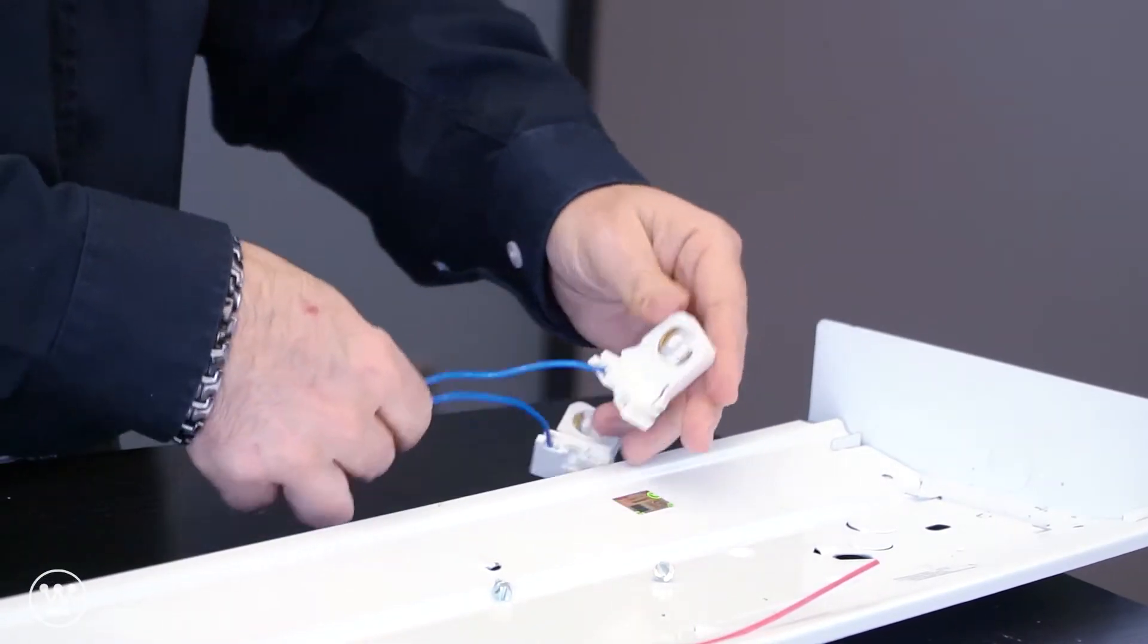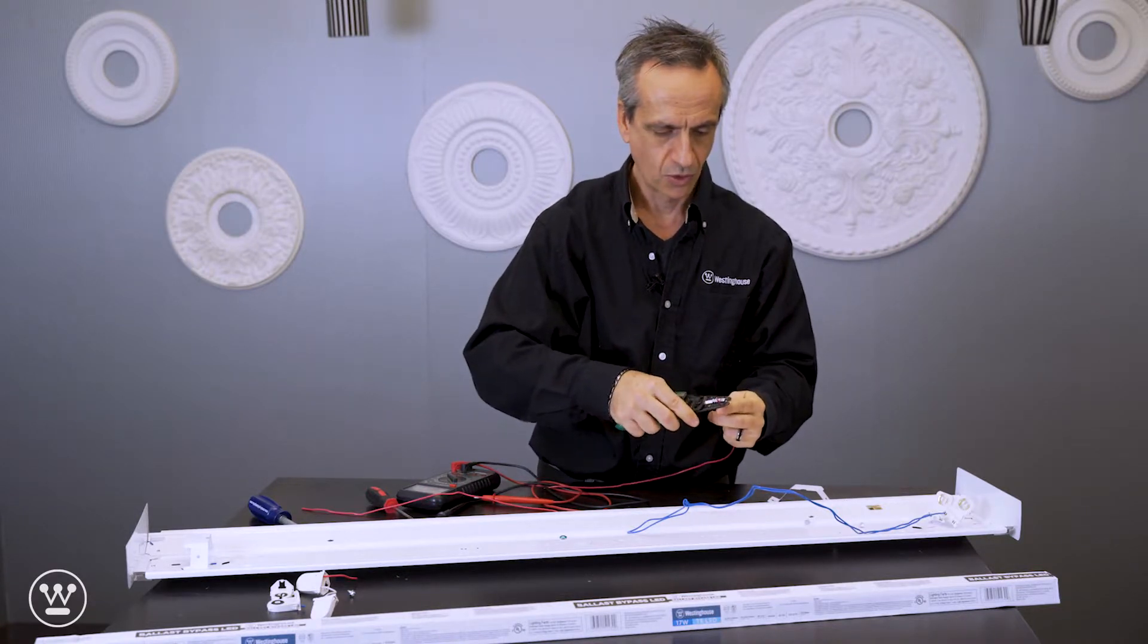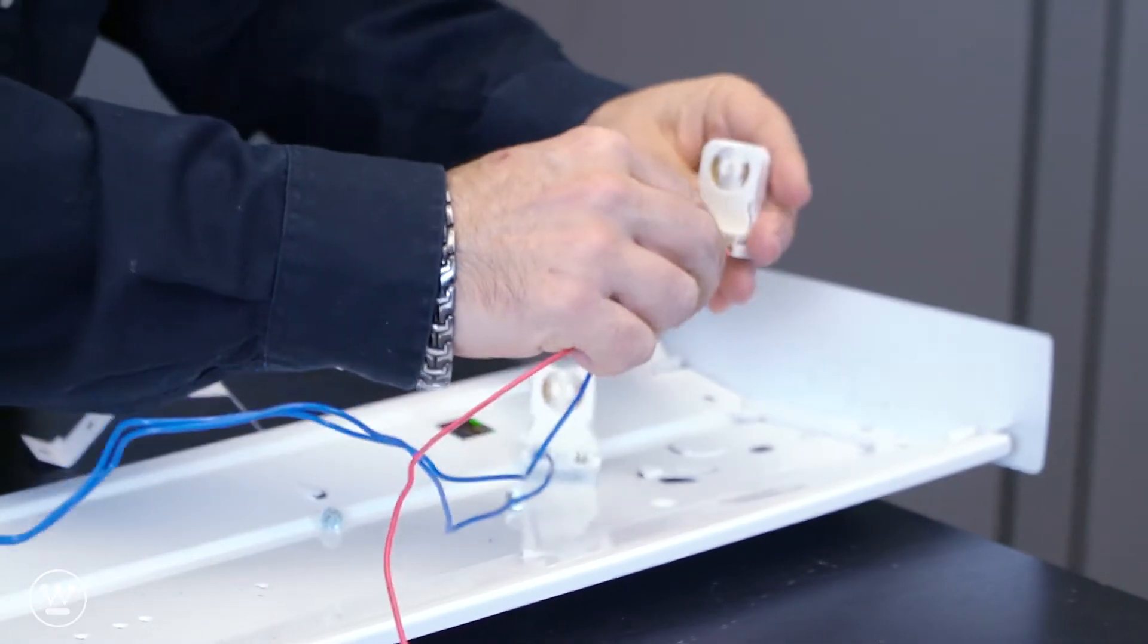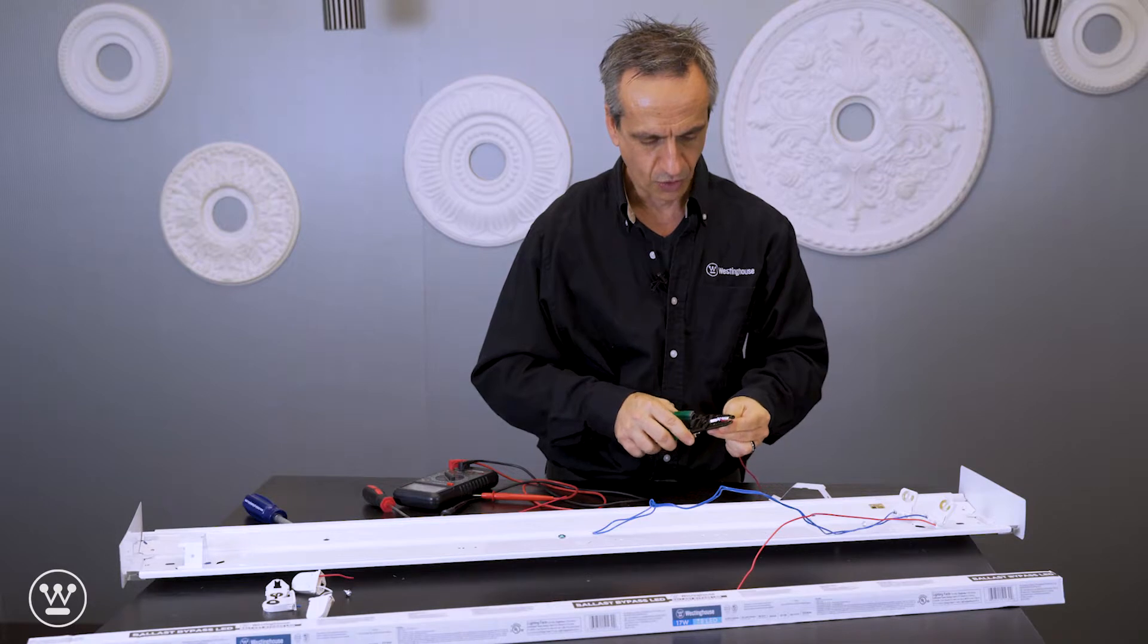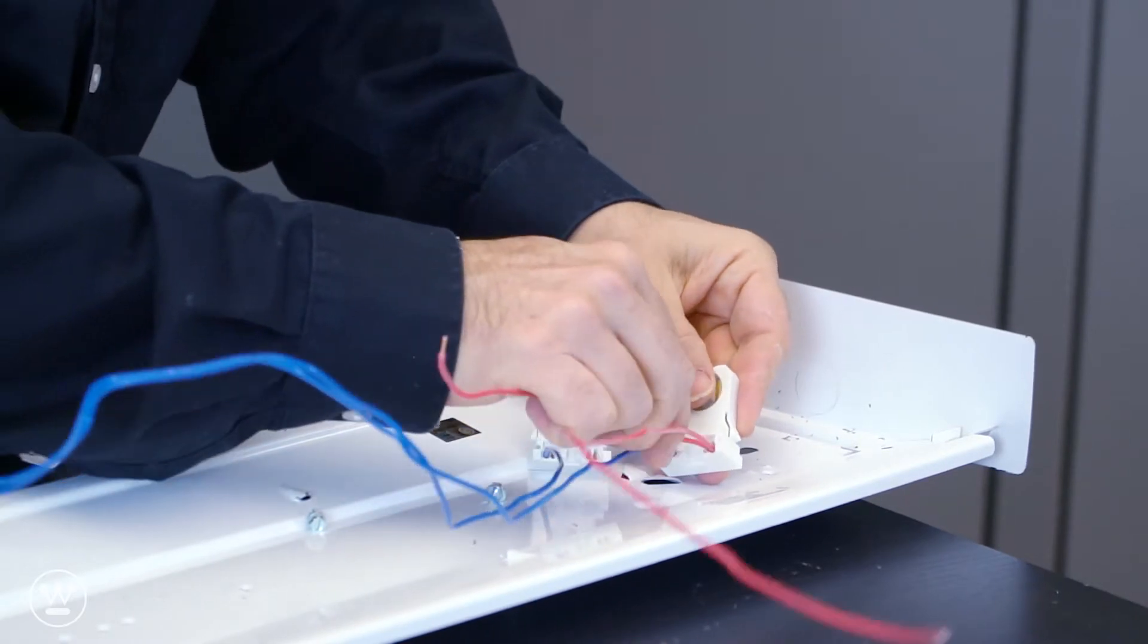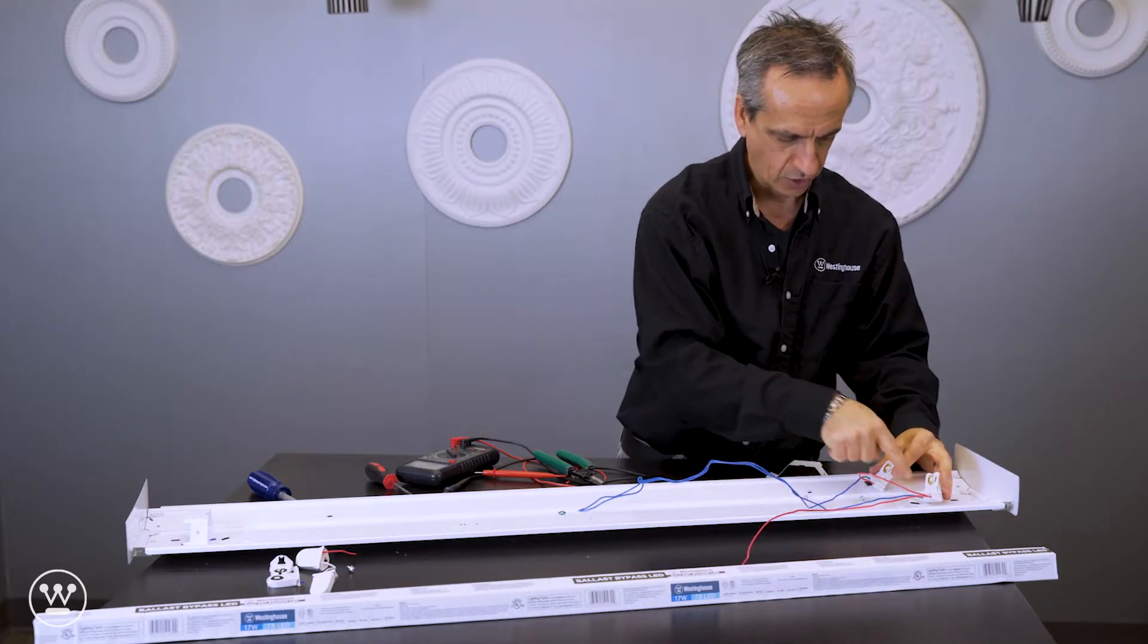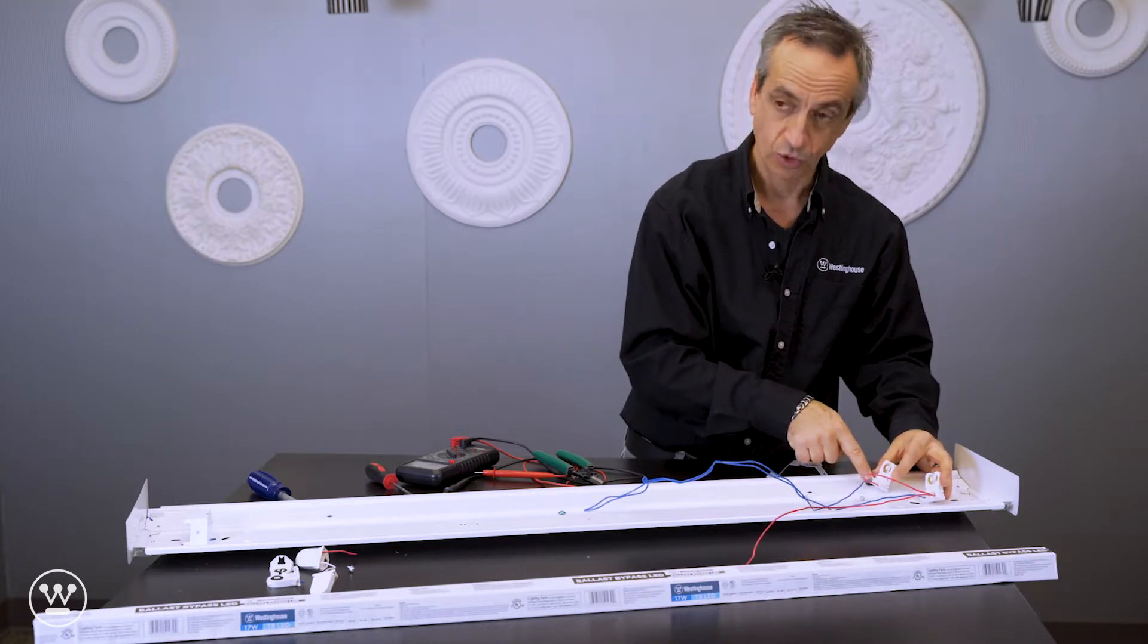We want to make sure that you keep the polarity the same. We're going to strip the red wire which will be feeding the other end of the tombstone. We want to have a jumper wire to go from one tombstone to the next. So now we have the red wire going on one side and blue wire going on the opposite side. And the jumper goes red wire on one side and blue wire on the other side.